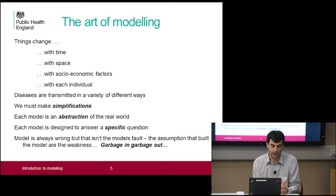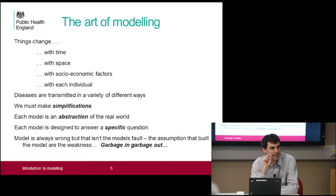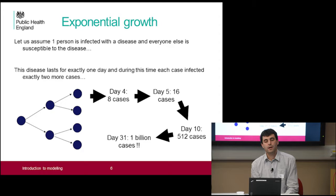This last point — the model is always wrong — is often quoted, and it's true. There's a slightly more nuanced version: as a mathematician I defend the model and say the model is right. It's the assumptions and the data that's gone in that are probably flawed, because those assumptions were made based on an evidential platform that was flawed.